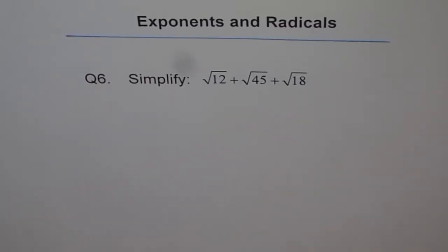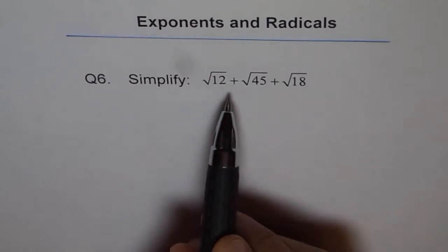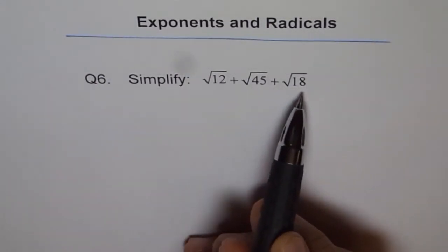Exponents and Radicals. Question 6. Simplify square root of 12 plus square root of 45 plus square root of 18.